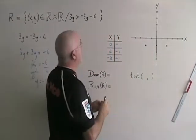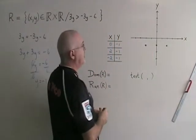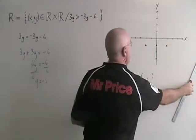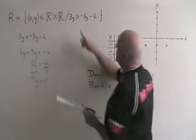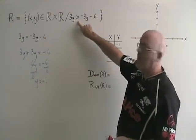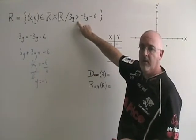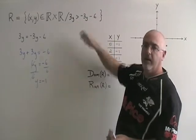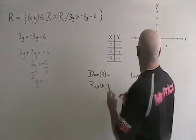It's time for me to draw my line. Before I do that, I check my symbol, and I see it is greater than — it is not greater than or equal to — so I need a dotted line.